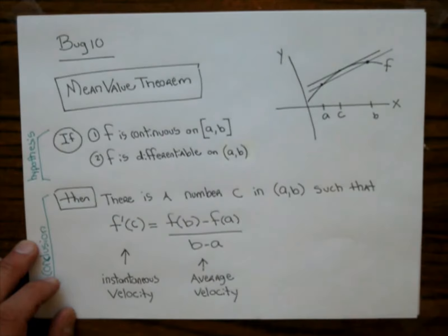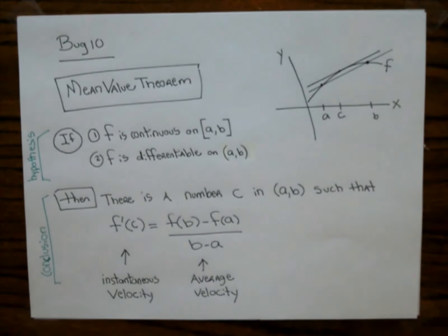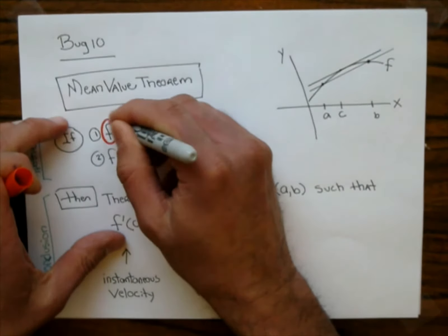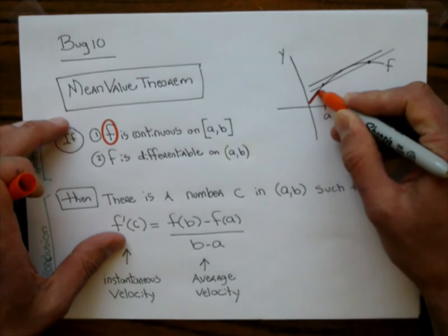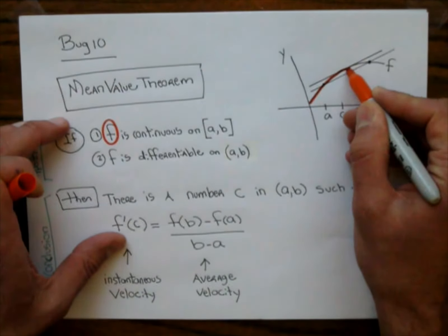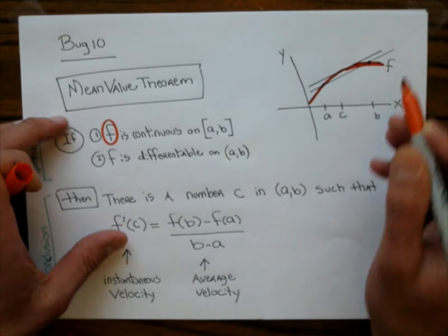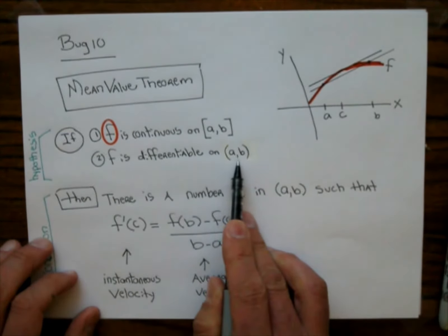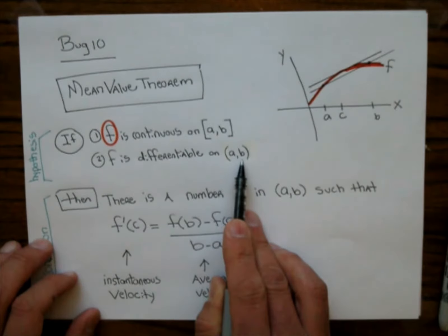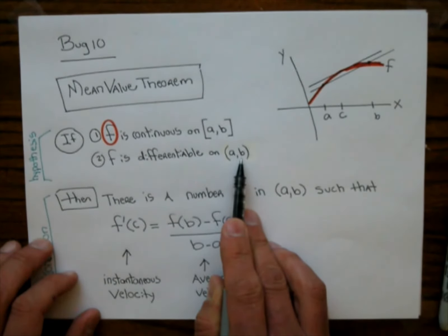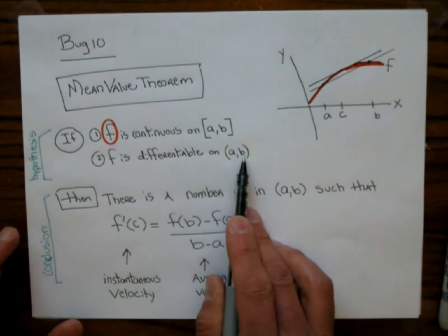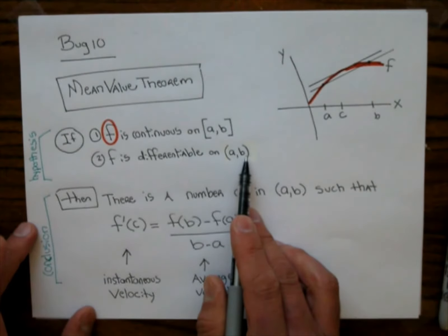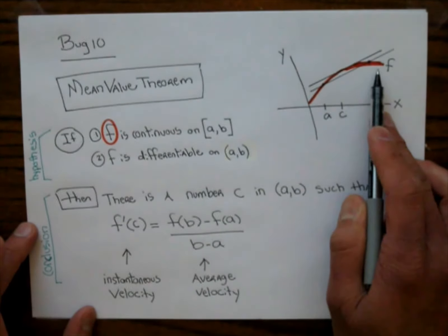sometimes they call that a closed interval, and your function, let's just circle this, it looks like this curvy thing here. And it's differentiable on the open interval from a to b. So that means we don't have any corners or anything like that. So we've got a nice smooth graph there.